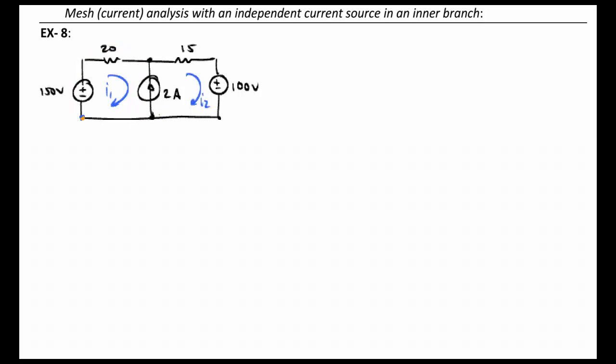So we can't walk around that loop, and if we try to walk around mesh 2, we're going to encounter the same current source and we can't express the voltage across it. The only path that we can take is actually a path that will surround a combination of the two meshes, and we call this a super mesh.